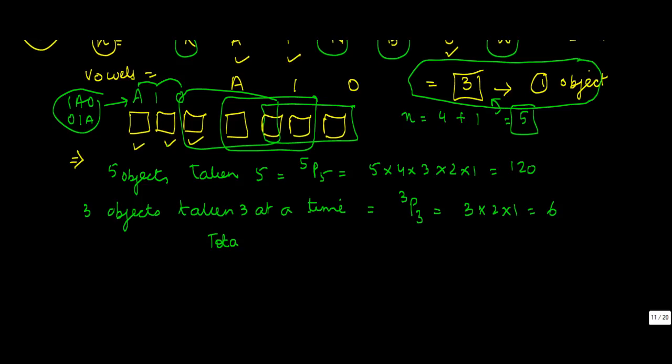So the total ways will be 120 × 6. Why? Because there are 120 ways to arrange the five objects, and six ways to arrange the three vowels, so the total ways become 720.